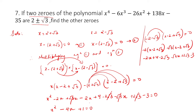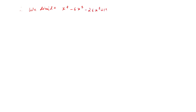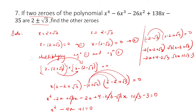So we are asked to find the other zeros. In order to find the other zeros, we divide. We will divide x to the power 4 minus 6x cubed minus 26x squared plus 138x minus 35 by x squared minus 4x plus 1, doing the reverse of splitting the middle terms.